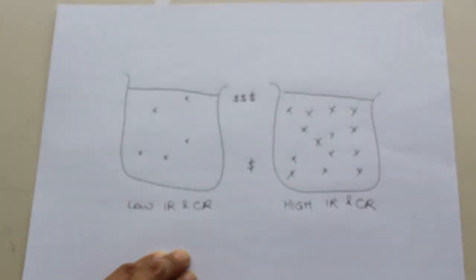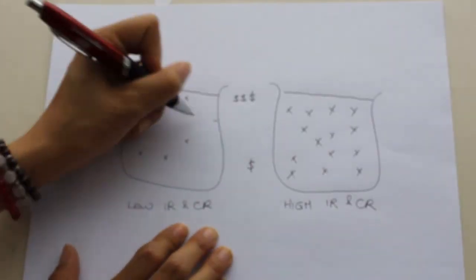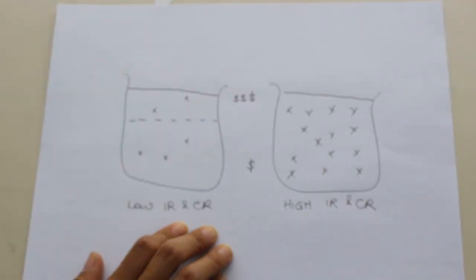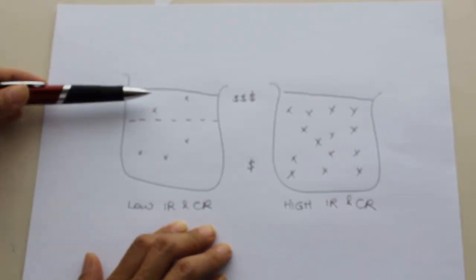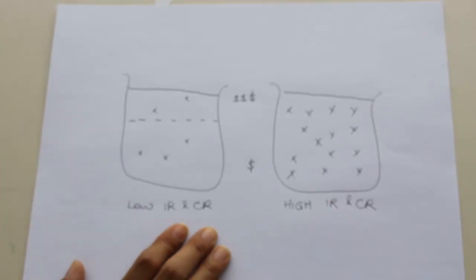if I set my materiality at a high level with this dotted line, I'm going to catch these two misstatements and I'm going to identify those as material. Then I'm going to say these three are not material.